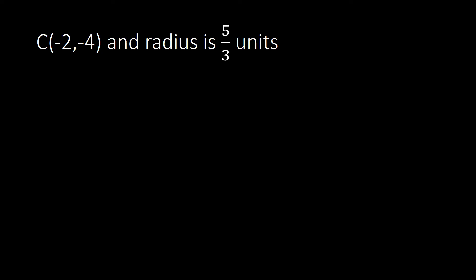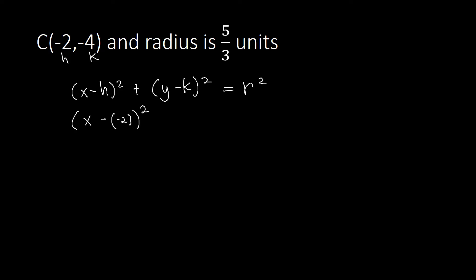Again, our formula is (x − h)² + (y − k)² = r². We plug in our values: h is −2 and k is −4, giving us (x − (−2))² + (y − (−4))², and that equals r squared where r is 5/3, so we raise 5/3 to the power of 2.